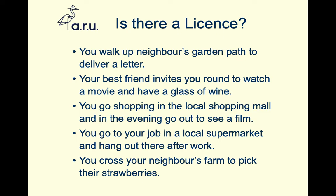Crossing your neighbour's farm to pick their strawberries: if that's a profit à prendre — an enshrined property right protected at Land Registry — your crossing of the farm to get the strawberries would be a license coupled with a grant. You've got permission to take something, and in order to take it you have to access the farm. If it's just permissive — your neighbour simply lets you go get strawberries — it's going to be a bare license. And if it's a pick-your-own strawberries farm and you're paying, it's going to be a contractual license. So in that end scenario there are three different possibilities.